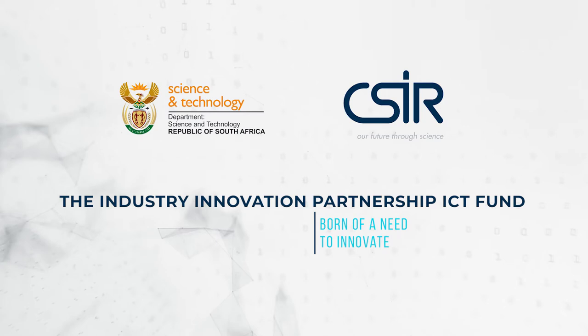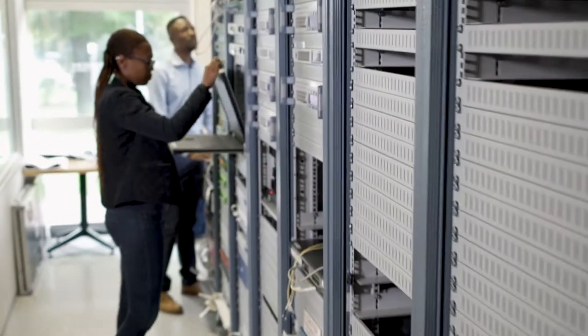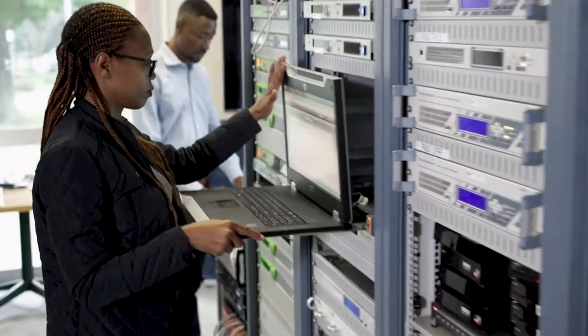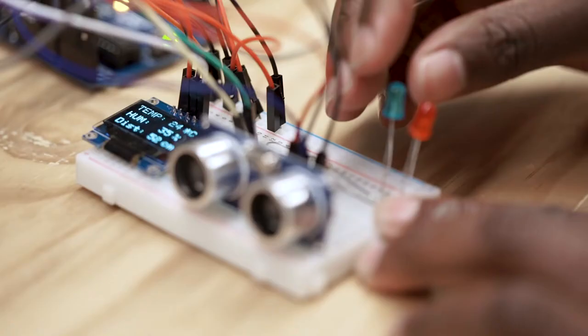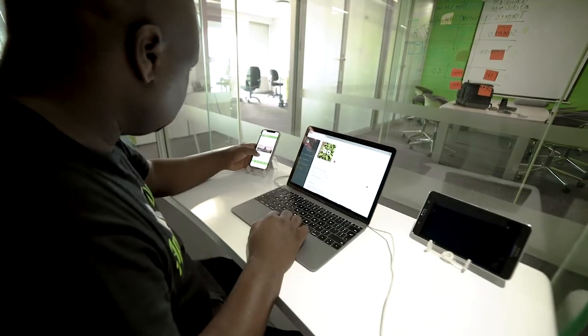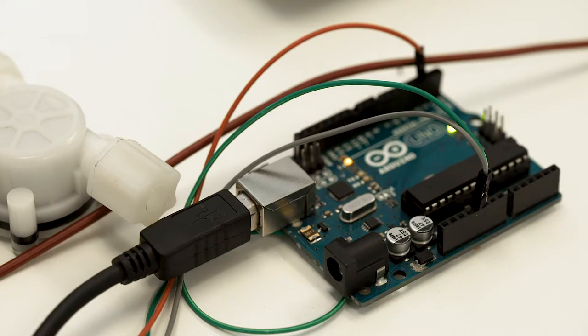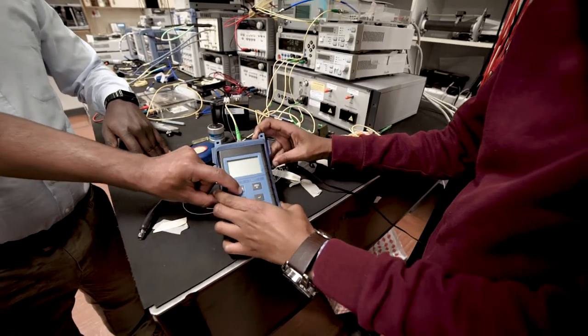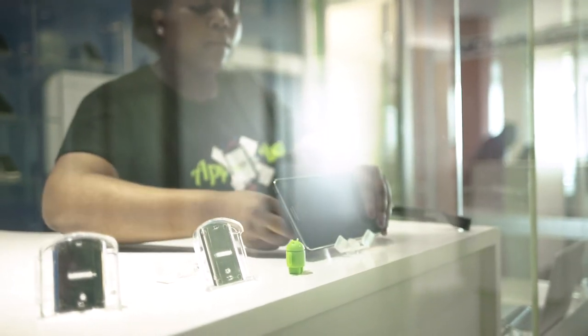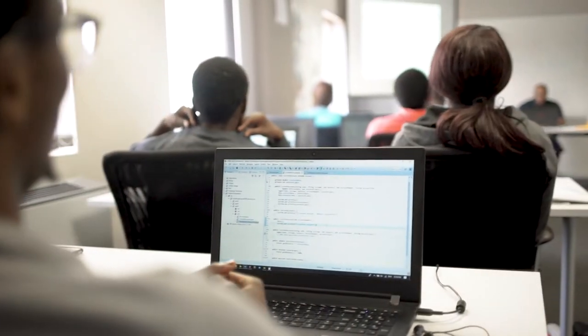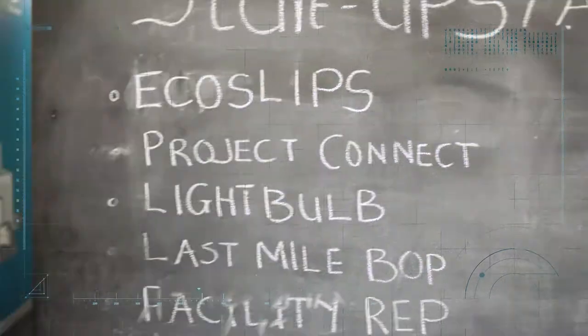The IIP-ICT Fund, an initiative of the Department of Science and Technology implemented by the CSIR Miraka Institute, was launched in 2014 and is focused on supporting industry competitiveness in the information and communication technology sector. The investment has already yielded over 36 SMME startups and well over 60 new commercial products, platforms and applications. We'd like to share with you six success stories born of the Fund.